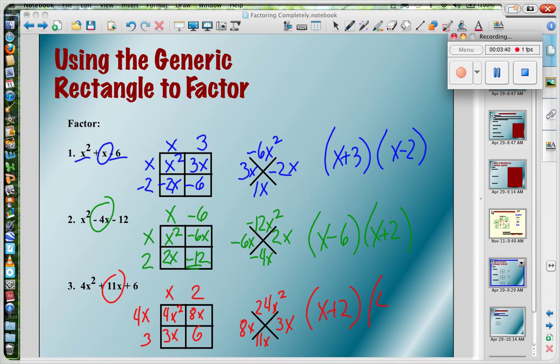So I'm done. Final answer, x plus 2 times 4x plus 3. Now, if you had them switched around, basically, these would just be in a different order, and that doesn't matter because we're multiplying, so it doesn't matter the order that you have the parentheses. And that's it.